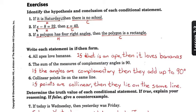Next one. If x minus 8 equals 32, then x equals 40. The hypothesis is x minus 8 equals 32. The conclusion is x equals 40.